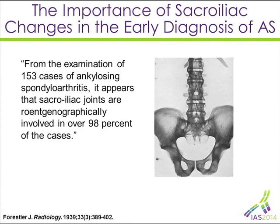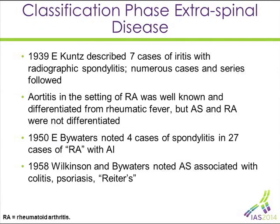This is an article of particular interest in defining this disease, by Jacques Forestier, who did so much to help us understand disease of the spine. He drew attention to the fact that in what they called ankylosing spondylitis — and this is really interesting — this is now the fully developed and end stage of the disease. All had radiographic evidence of sacroiliitis, at least 98%, in this landmark study. From that point on, through the 30s, 40s, and 50s, many of the extra-articular manifestations were defined, including aortitis, ocular disease, and the relationship to inflammatory bowel disease.